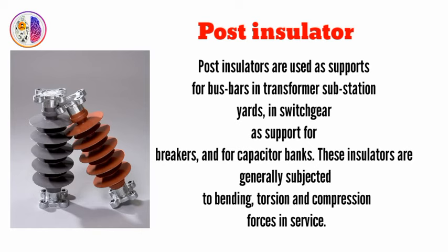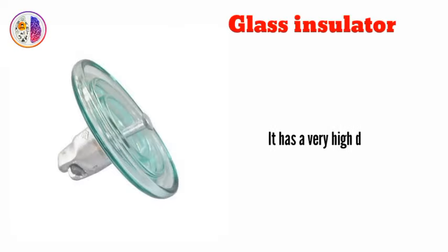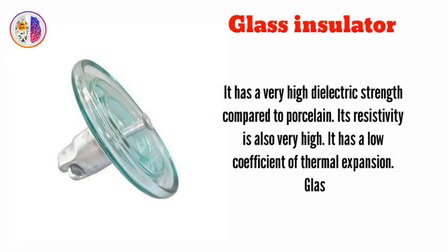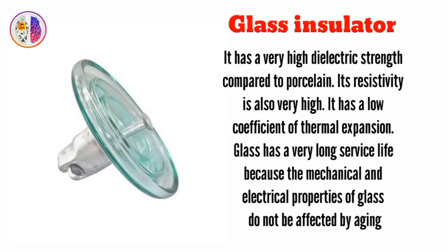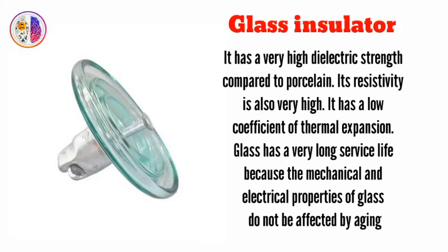If you use it for mechanical support or mechanical strength, or as a device support, you can use it as a post insulator. Next is the jumper loop insulator. For example, it is a glass insulator. If you use it as paper insulation or a polymer insulator, it is very small, so it is very rare in any of its imports. You can use it as a glass insulator for high tension.